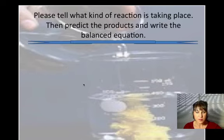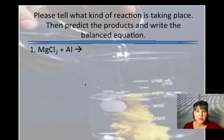One of the first steps in predicting a product of a reaction is to tell what kind of reaction is taking place. So let's look at the first example.